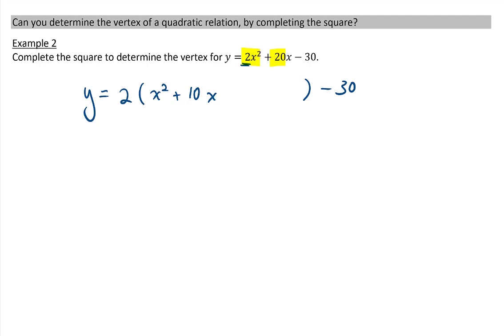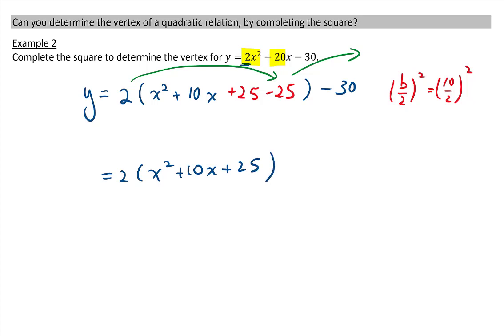To make a perfect square, we take our b value and divide it by 2 and square it. So that's 10 divided by 2 and squared, which tells us we're going to add 25 and subtract 25. The next part is to kick out the negative constant. So now we have 2 times x squared plus 10x plus 25 minus the 30. We kicked out the minus 25, but we have to multiply it by 2, so that gives us minus 50.